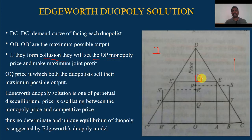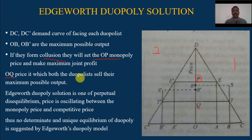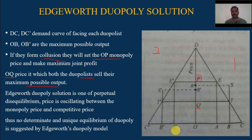If they form collusion, they can fix a very high price so that they can reap maximum profit. The competitive price OBE is the price at which both duopolists sell their maximum possible output — that is, OBE for each of the two duopolists.